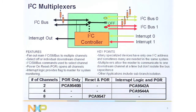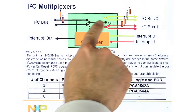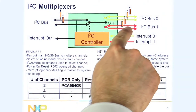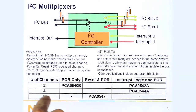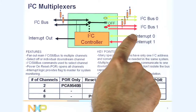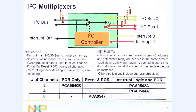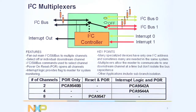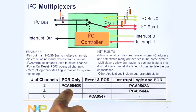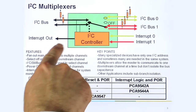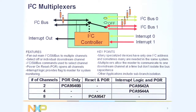The multiplexers have a single wiper within them. We have either 2, 4, or 8 channel devices — two are shown here. The wiper just allows you to select one channel or any one of the channels one at a time. And we have devices with power-on resets, a reset pin, or interrupt logic.